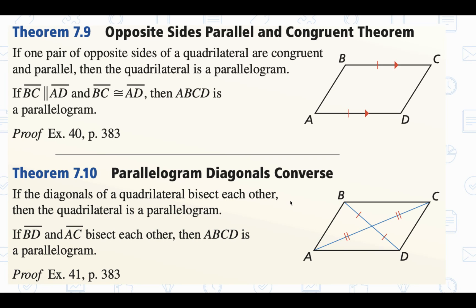Our last converse is the diagonals converse. Remember that if we're given a parallelogram, then the diagonals bisect each other. So the converse is: if you have a quadrilateral and the two diagonals both bisect each other, that's enough to conclude that you do have a parallelogram.